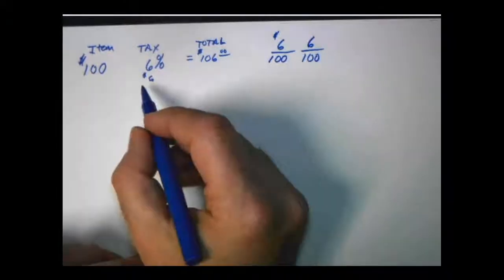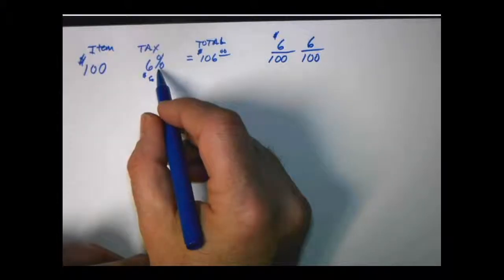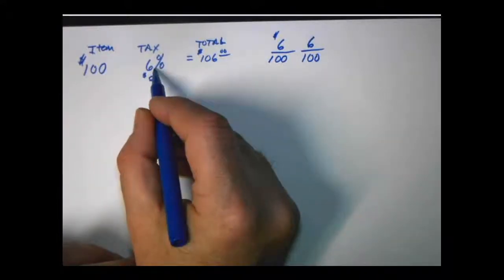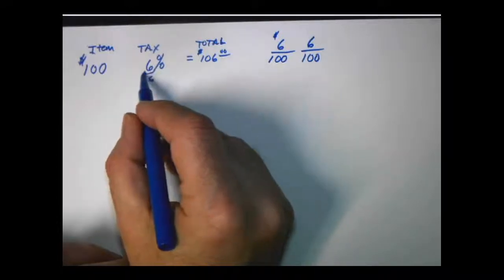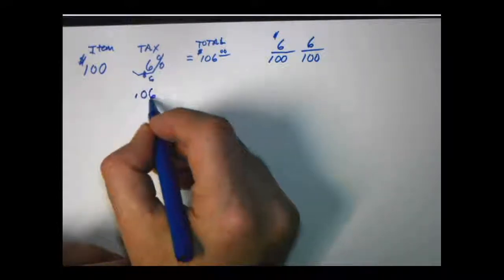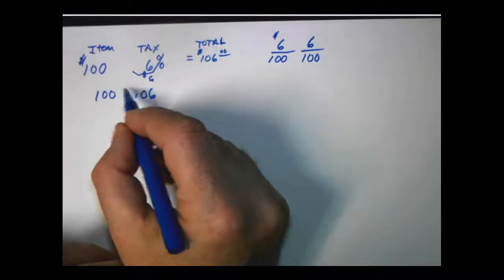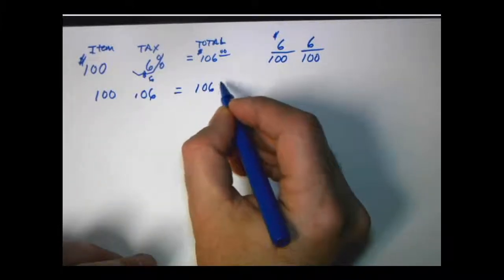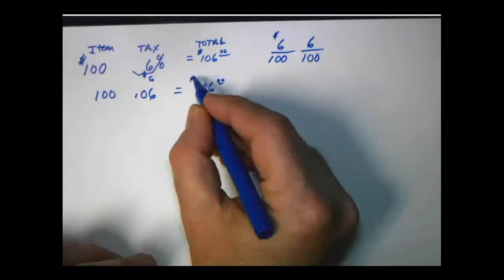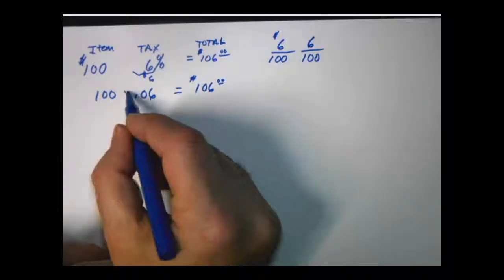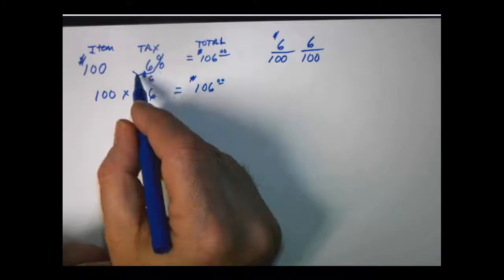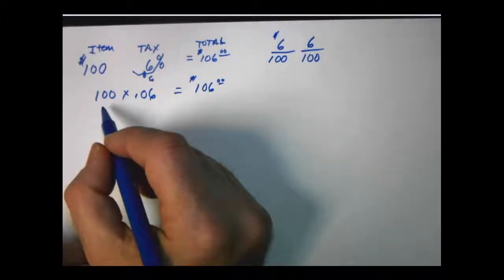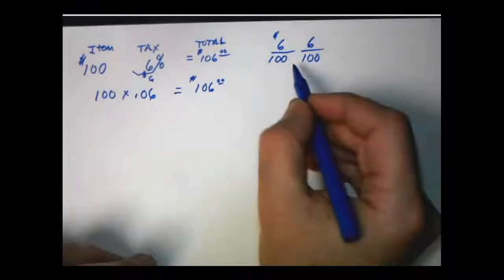The second way to do these problems is to change the percent to a decimal. So we would move this over two spots and we would take the item times it by the tax and we would still get $106 because the answer is the answer. But we could do it in two different ways. So you can change it to a decimal and multiply or you can simply do our is over of.